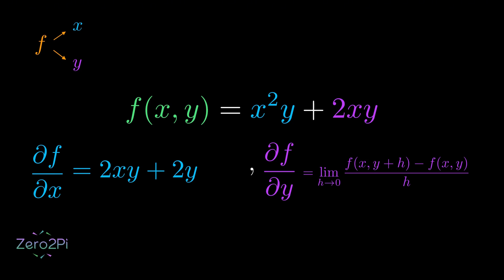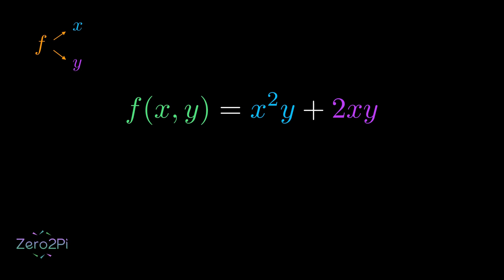For the partial derivative with respect to y, we treat x as a constant. So, the derivative of x²y is x² and the derivative of 2xy is 2x. So, we get x² plus 2x. Pretty simple, right?